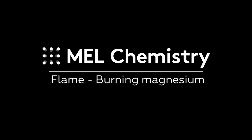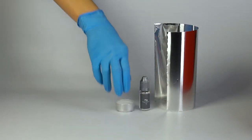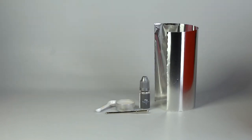For the burning magnesium experiment, you will need a sheet of foil, magnesium, a candle, tweezers, a measuring spoon, and some filter paper.